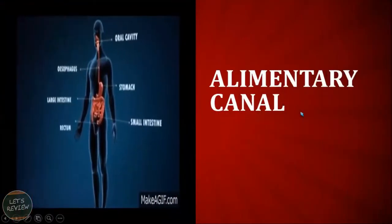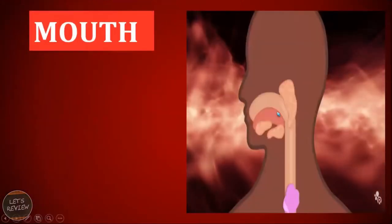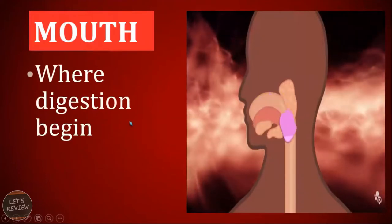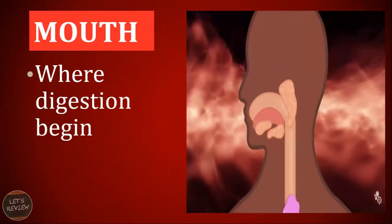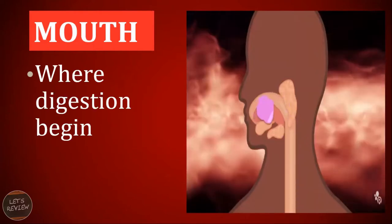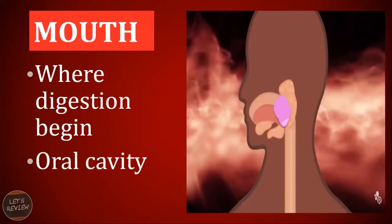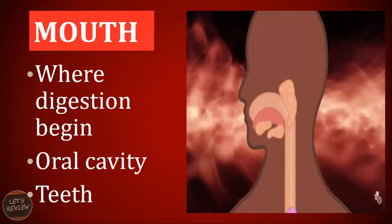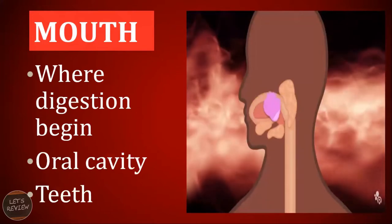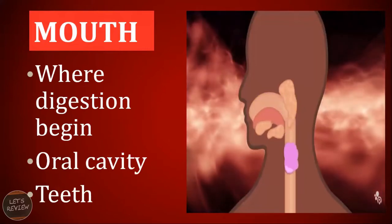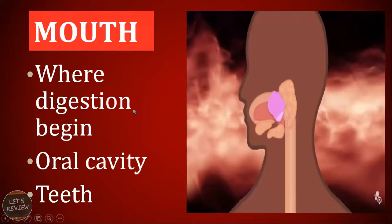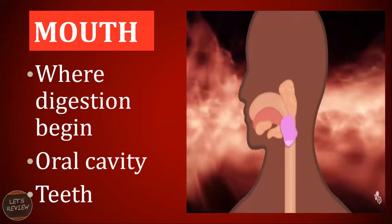Beginning with the alimentary canal — from the name itself, canal, it's like a canal. Starting from the mouth, this is where the first digestion happens. When you eat something sweet, you will notice that it dissolves easily by the saliva, so carbohydrates and sugars are already being dissolved first in your mouth. The mouth is also known as the oral cavity. The teeth, as part of your mouth, help to chew the food or digest it physically, and the salivary glands produce saliva to chemically digest the food you are chewing.